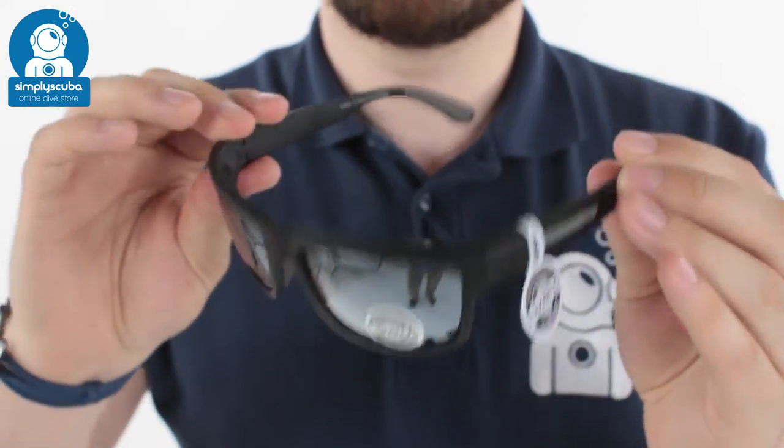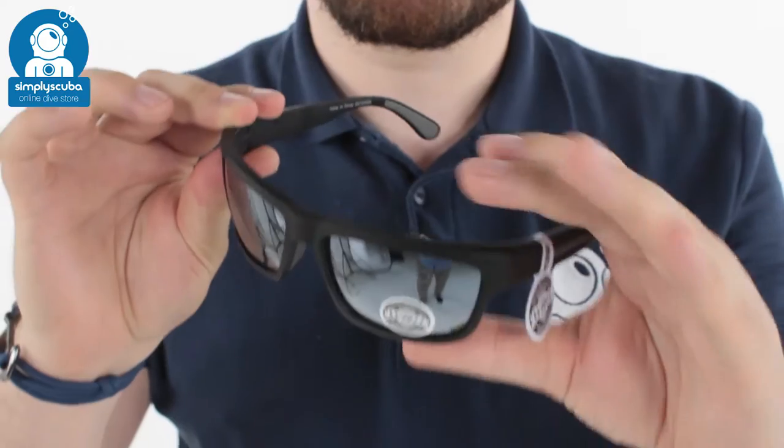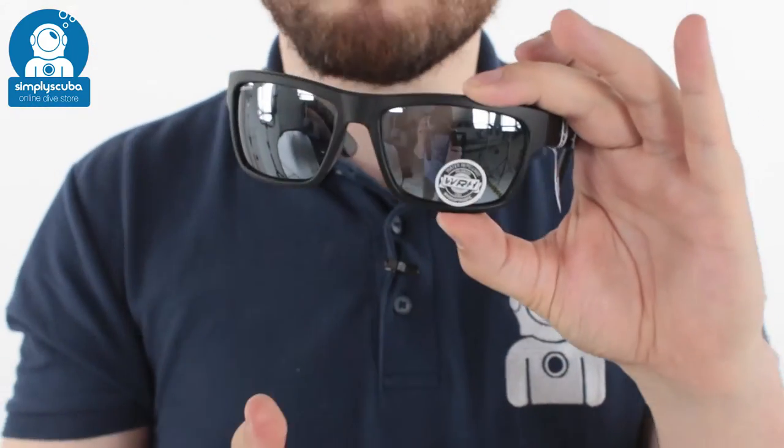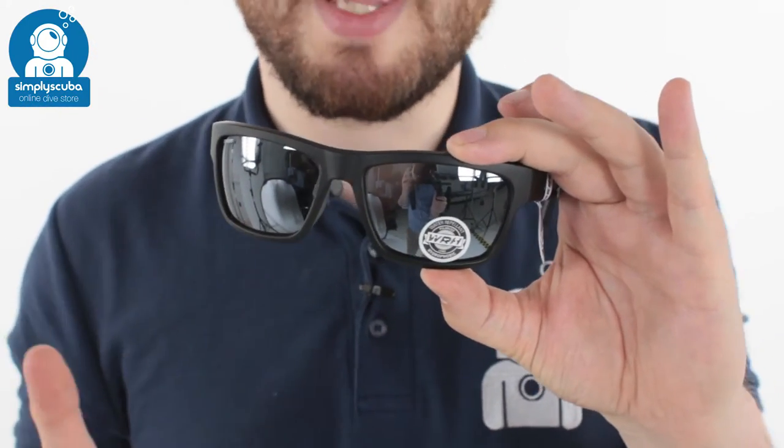The sunglasses themselves are a nice dual material frame. The lenses are all polarized so they're going to reduce the amount of glare that comes in from the sun and reflects off the water.